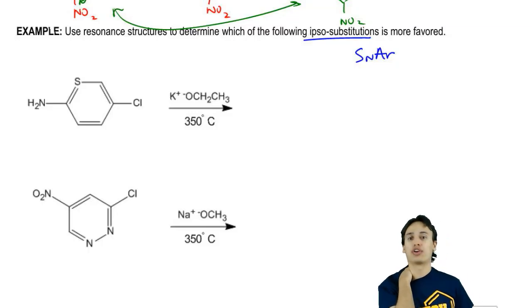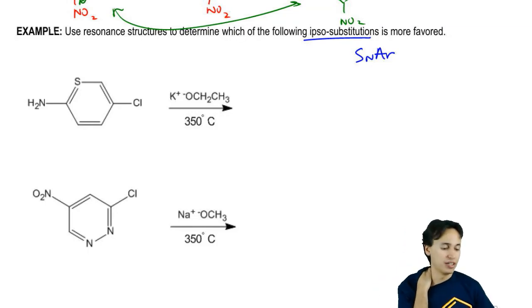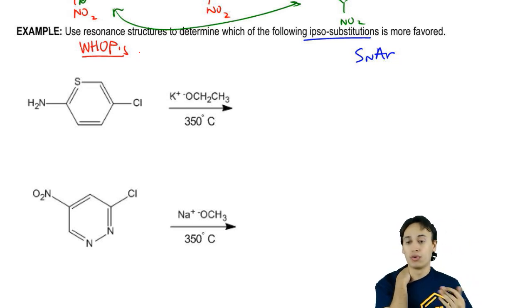First of all, I don't really need to draw resonance structures to know the answer to this question because all I'm looking for with an SNAr mechanism is I'm looking for WAPs. The one with more WAPs is going to win.